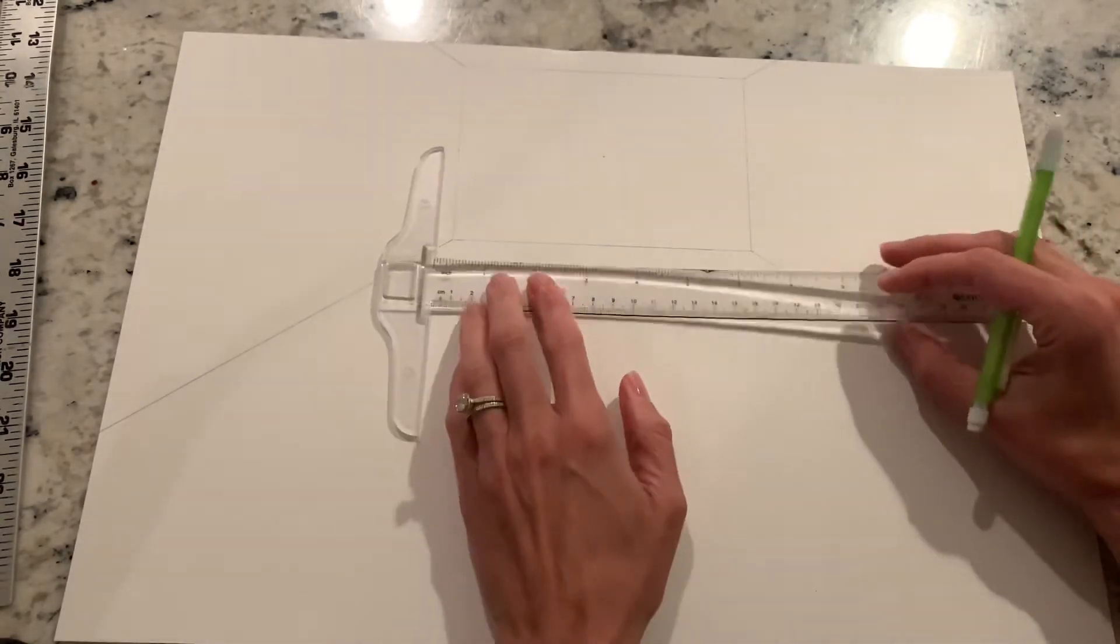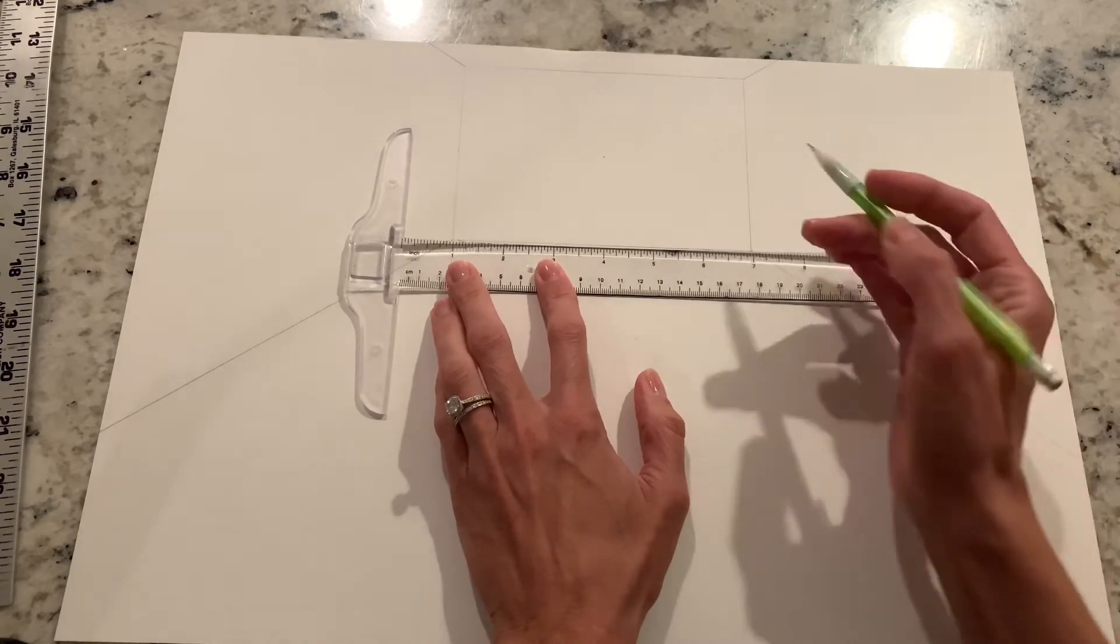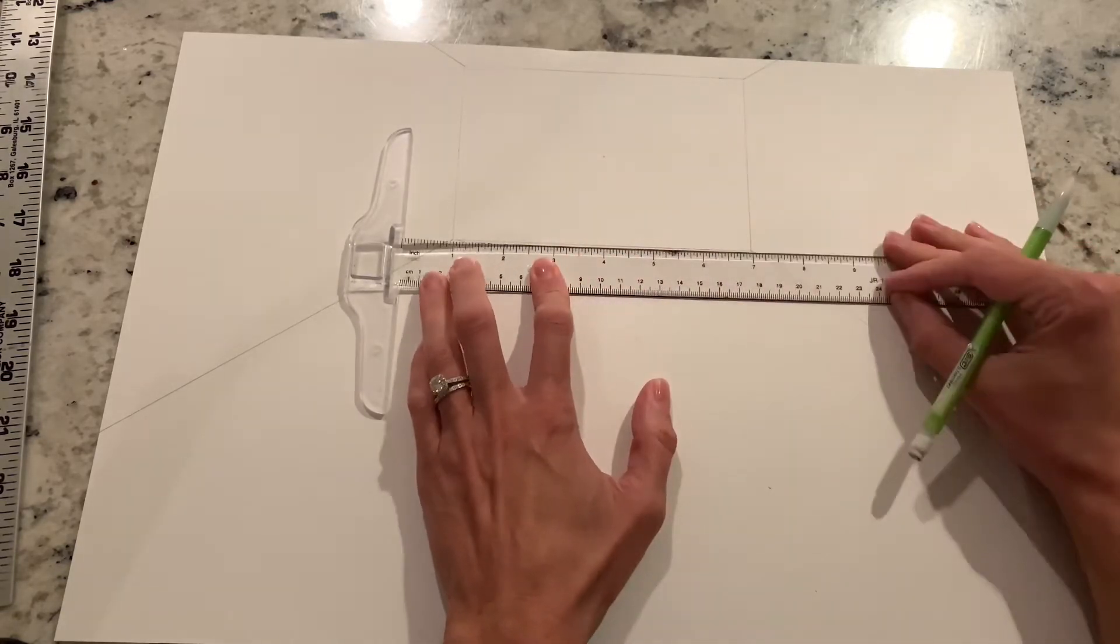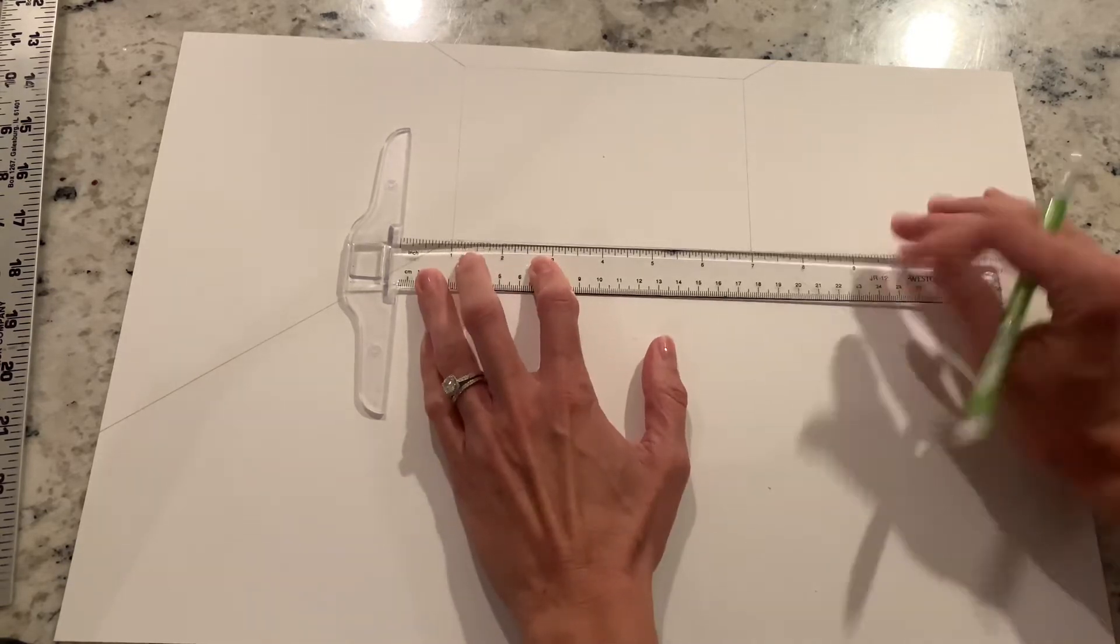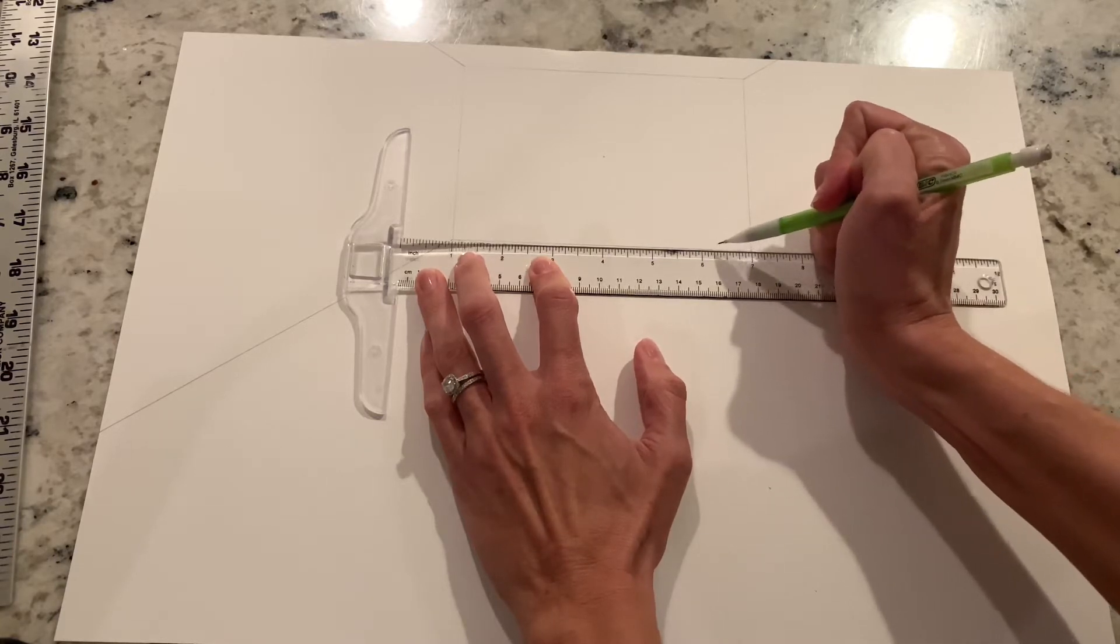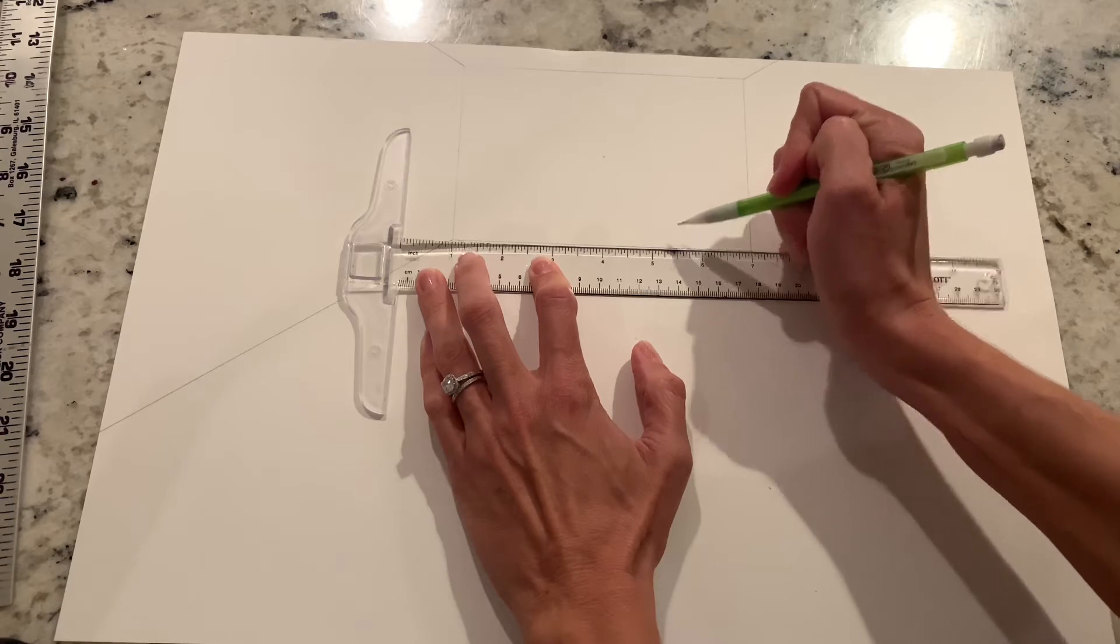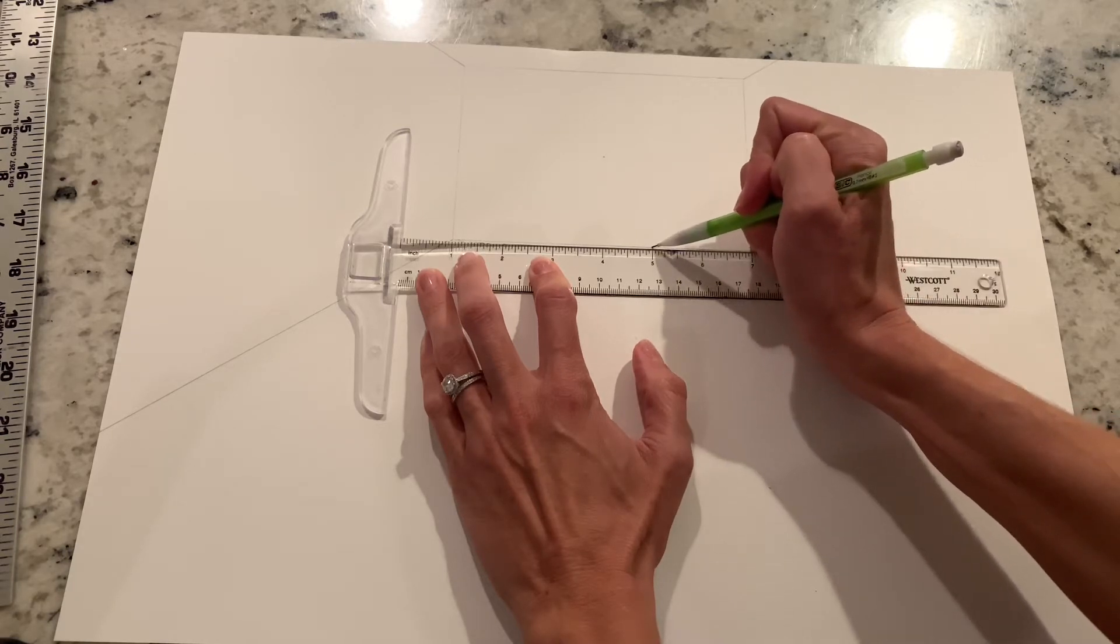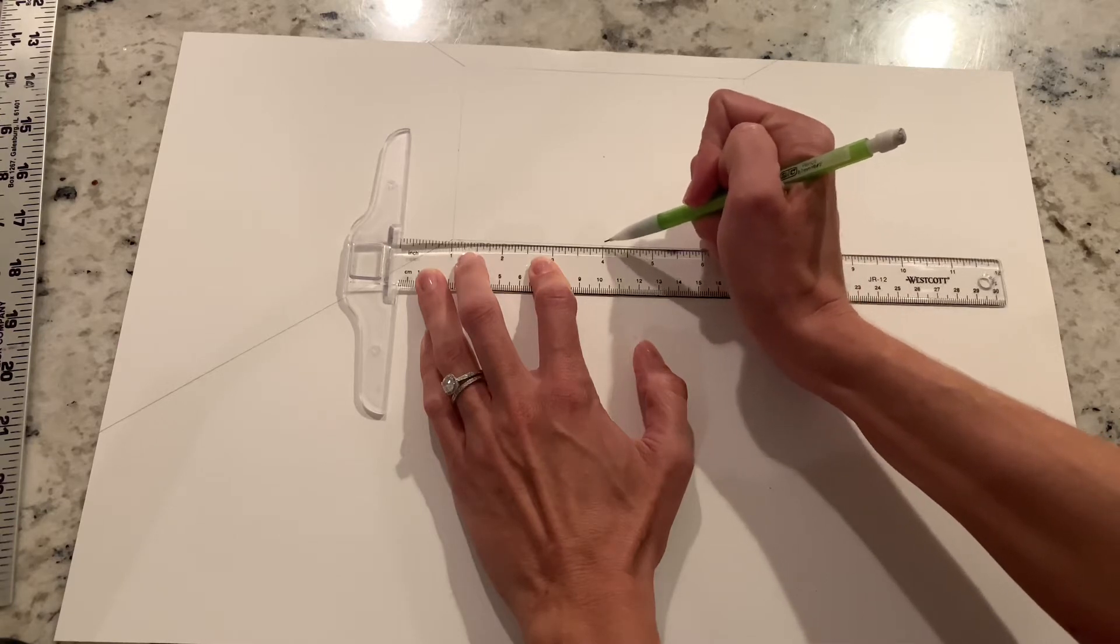You could choose quarter of an inch or an eighth of an inch. For purposes of not making this super long, I'm going to go with a quarter of an inch, so you're gonna mark that off every quarter of an inch.